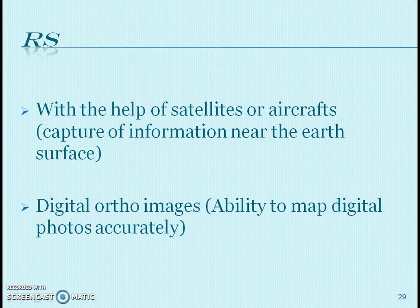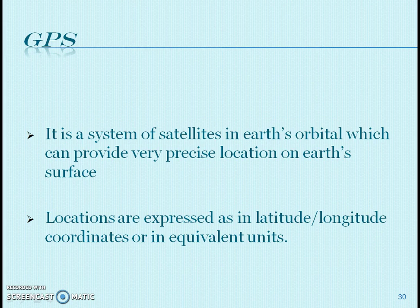Remote sensing is another part which helps satellites or aircraft to capture images or information near the earth's surface, using digital images for tracking. GPS is another system which uses satellites in earth's orbit to provide very precise locations on earth's surface, expressed as latitude and longitude coordinates.